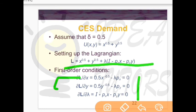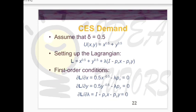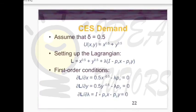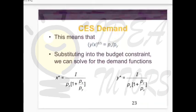We solve the first two partial-derivative equations to find some value for px*x or py*y. Suppose after solving those two equations we get a relationship, then after simplifying we can get py*y, and we substitute that into the budget constraint — the third equation — to find x-star and y-star that maximize the consumer's utility.